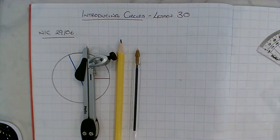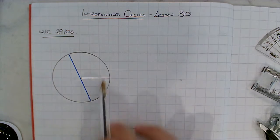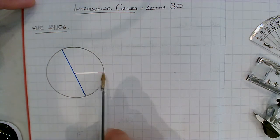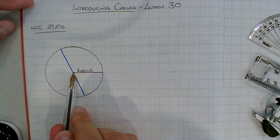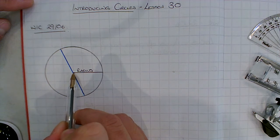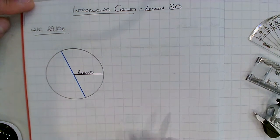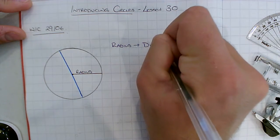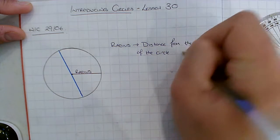I'd like to start off with just a bit of terminology — some key things about a circle. You're going to need to draw this circle in your books and make the notations that I'm going to do. So I've drawn this circle and two lines on it. This line here is called the radius, and that goes from the centre of the circle to the edge. It can go from anywhere to the edge — as long as you're going from the centre to the edge, you have a radius. The radius is the distance from the centre of the circle to the edge.